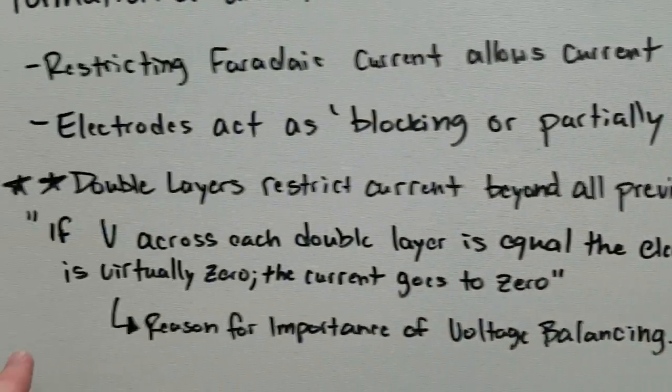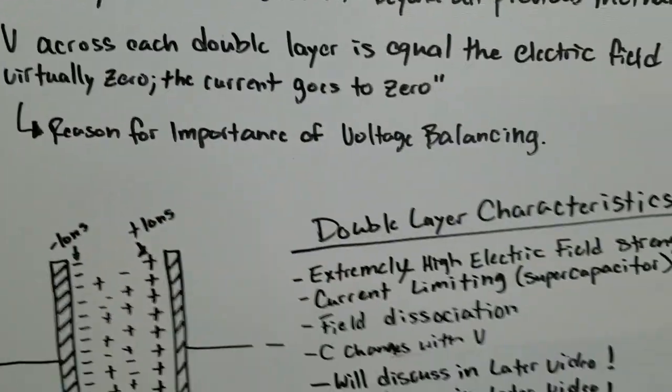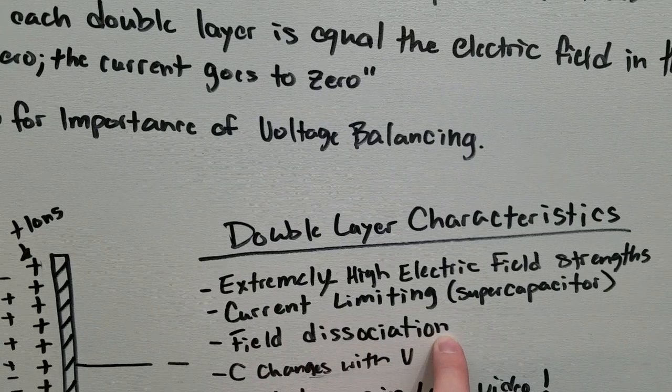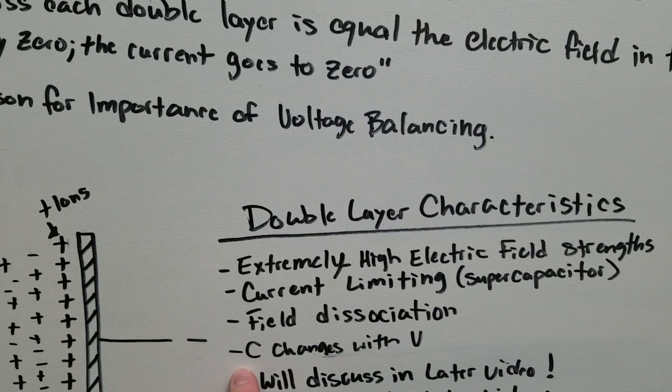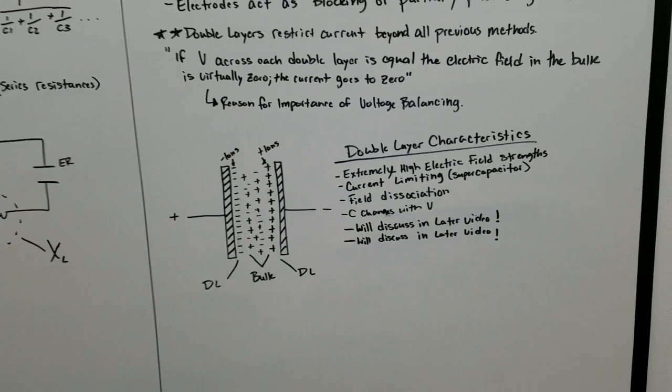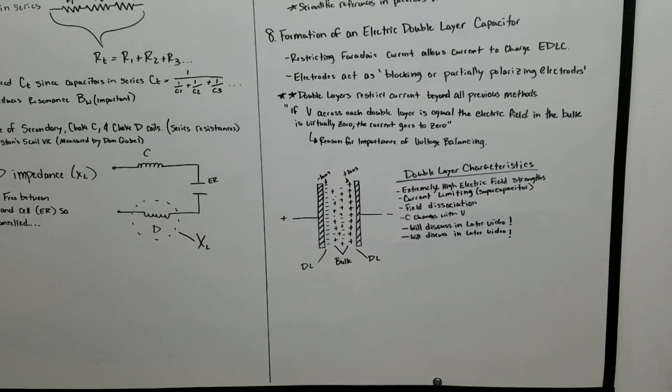Electric field in the bulk is virtually zero. So current limiting is one of the effects. Field dissociation of water molecules. Now the capacitance changes with voltage, which is one problem that we have the scanning circuits for.